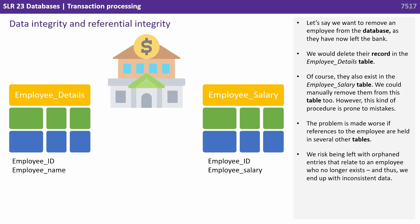Say we want to remove an employee from the database who has now left the bank. We would delete their record in the employee details table. Of course, they also exist in the employee salary table, so we could manually remove them from that table too.